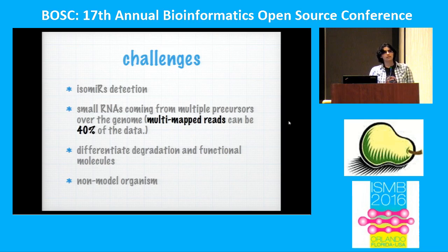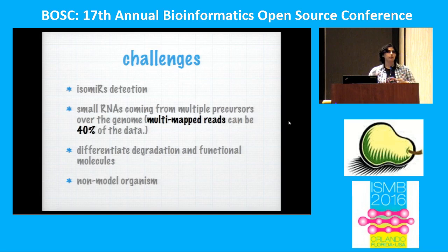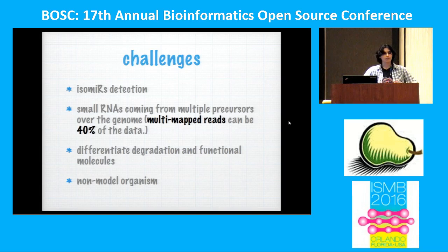Another issue is multi-mapped reads, which can be very high in some cell types. Not all of them are from repeat elements — many come from tRNA — and if you don't analyze that, you're throwing away data and possibly missing something important. We also try to include visualizations to help differentiate functional molecules. For well-annotated genomes you get all results, but for non-model organisms you can still get a general characterization with bcbio.